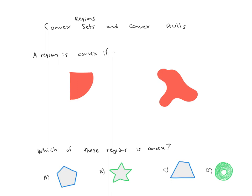A region of the plane is called convex if for any two points in the region, the straight line segment between them lies entirely within the region.